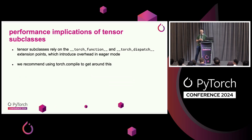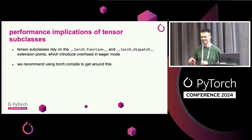However, it's not all free. There is one caveat, and that is eager performance. If you extend Torch function or Torch dispatch, that incurs eager mode overhead. There is at least one good solution: use Torch Compile, and it will get rid of the overhead.